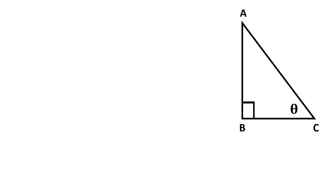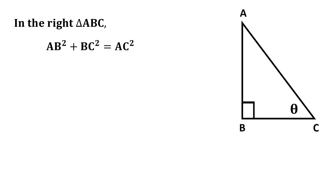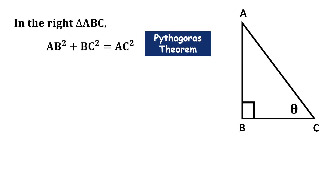Now let us take a right angle triangle ABC, which is right-angled at B, and we have taken the base angle C as theta. In this right angle triangle ABC we can say AB² + BC² = AC². This comes from the Pythagoras theorem, which states that the square of the hypotenuse is equal to the sum of the squares of the other two sides.